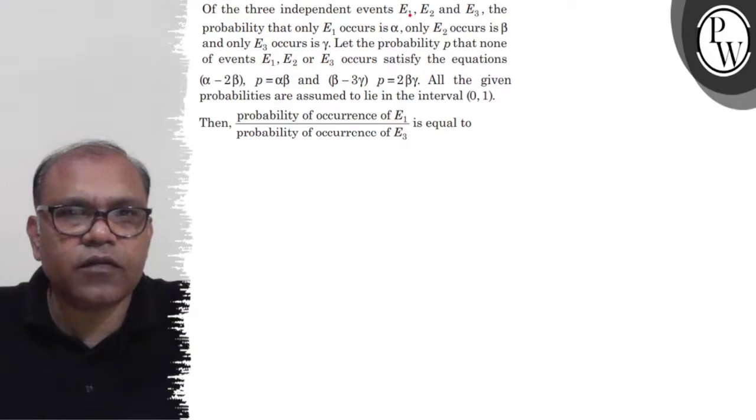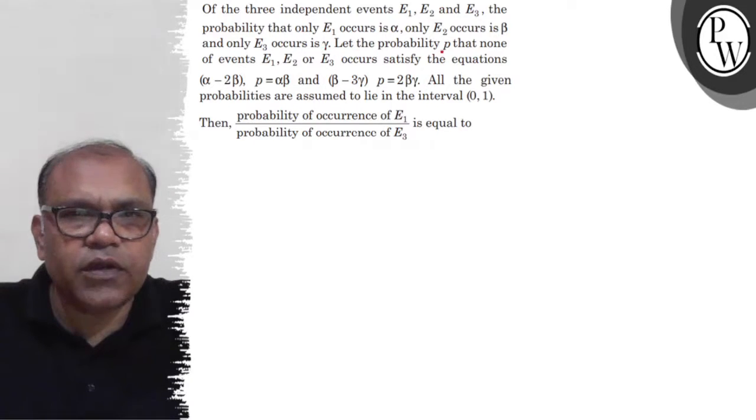of the three independent events E1, E2 and E3, the probability that only E1 occurs is alpha, only E2 occurs is beta and only E3 occurs is gamma. Let the probability P that none of the events E1, E2 or E3 occurs satisfy the equations: (alpha minus 2 beta) into P equals alpha beta and (beta minus 3 gamma) into P equals 2 beta gamma. All the given probabilities are assumed to lie in the interval 0 to 1. Then probability of occurrence of E1 upon probability of occurrence of E3 is equal to.